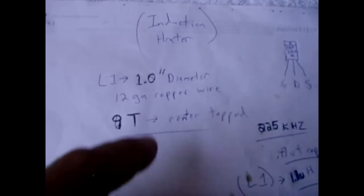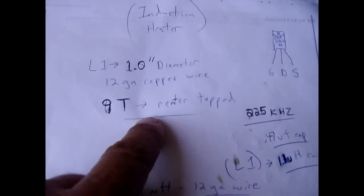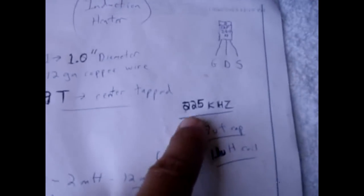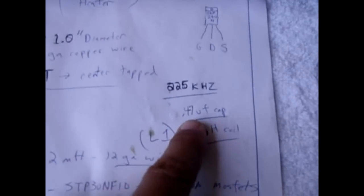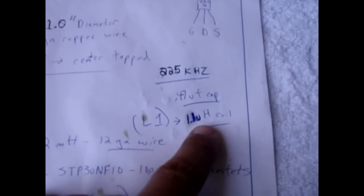Alright so here's the schematic. You're going to be using 12 gauge copper wire for everything. 1 inch diameter on that coil there. It's 9 turns center tapped. So you're going to wind 9 turns. You're going to come out with this one in the middle here. That's a center tap at 4.5. So you have the full 9 with a 4.5. In my case it's 225 kilohertz with a 0.47 cap and a 1.1 microhenry coil.